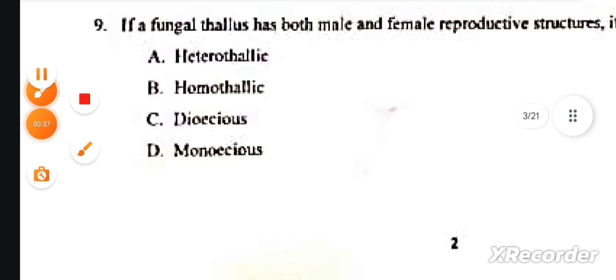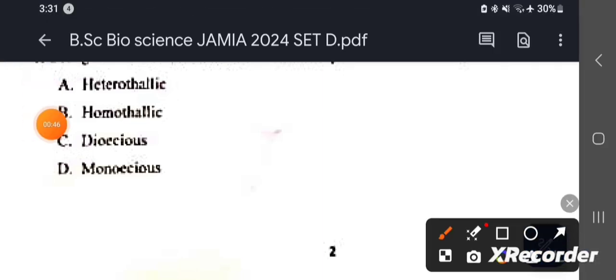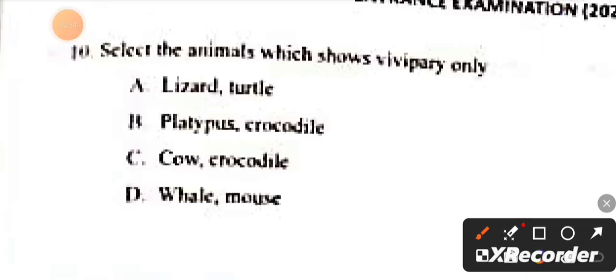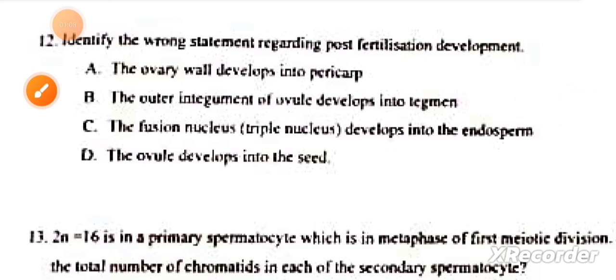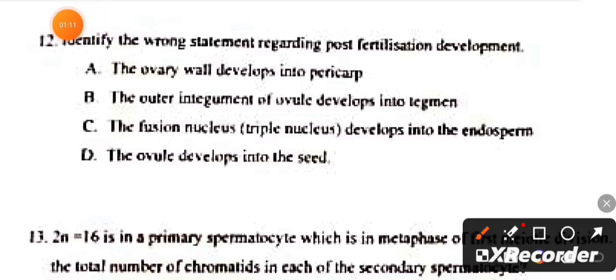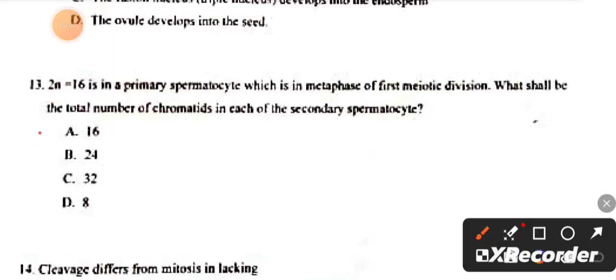Question number 9: If a fungal thallus has both male and female reproductive structures, it is called? This answer is B, homothelic. Question number 10: Select the animals which are viviparous. This answer is D, whale and mouse. Question 11: The true embryo develops as a result of fusion of? Correct answer is B, egg cell and male gamete. Question 12: Identify the wrong statement regarding post-fertilization development. This answer is B. Question number 13: Correct answer is A, 16.